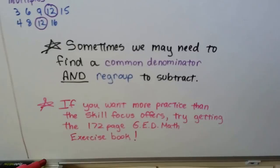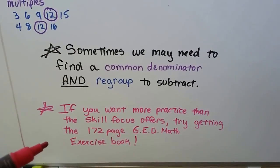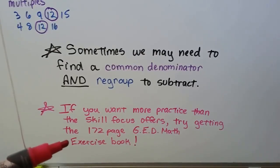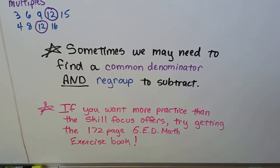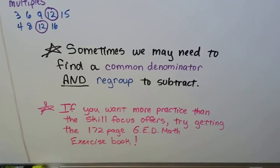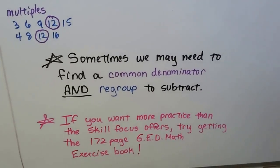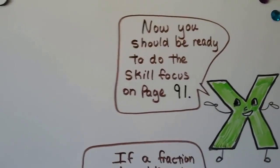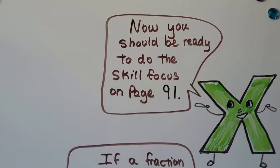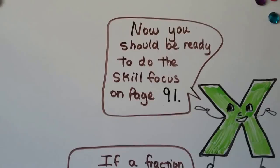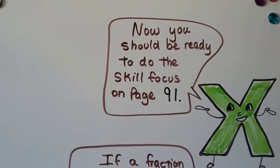If you want more practice than the skill focus offers in your big GED book, there's a Steck-Vaughn GED math exercise book that's only 172 pages with extra problems. It's about a fourth of the thickness of the big GED book, but you'll get extra practice. Now you should be ready to do the skill focus on page 91. If you understood this video and do that skill focus with no problem, you're ready for the next lesson.